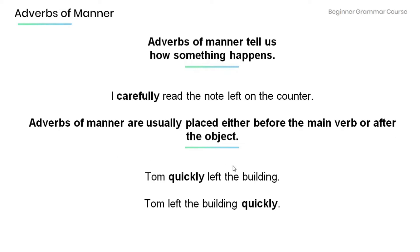Have a look at the examples below. 'Tom quickly left the building' — the adverb of manner 'quickly' modifies the main verb 'left' and comes before it. In the sentence 'Tom left the building quickly,' the adverb of manner 'quickly' again modifies the main verb 'left,' but this time it comes after the object 'building.'